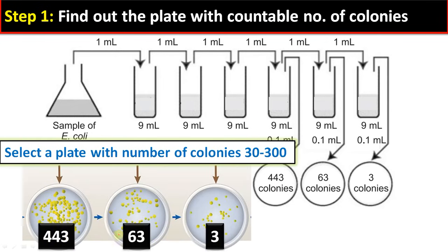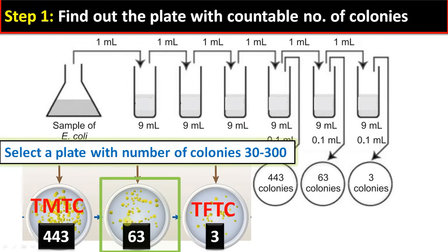Let us zoom in on these plates. Suppose this is a plate with 443 colonies — this is considered too many to count; beyond 300 the colonies are very crowded and the chance of error is very high. The third plate has only 3 colonies — too few to count; below 30 the sample size is too small. So we need a plate with colonies between 30 to 300. The plate with 63 colonies is selected — step one is complete.